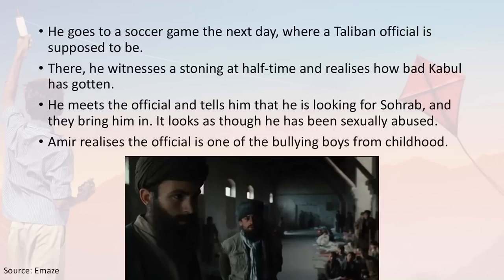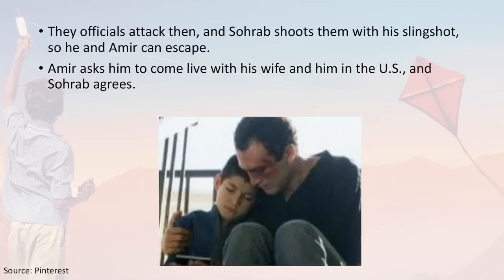Amir, now realising Hassan was his half-brother, feels a real responsibility towards Hassan's child. He goes to a soccer game where a Taliban official was supposed to be, witnesses a stoning at halftime, and realises just how bad Kabul has gotten. He meets the official, who brings in Sohrab — and it appears that Sohrab, much like his father, had been sexually abused. Amir recognises the official as one of the bullying boys from childhood. The official attacks them, but Sohrab shoots him with his slingshot so that he and Amir can escape. Amir asks Sohrab to come and live with him and his wife in the US, and Sohrab agrees.